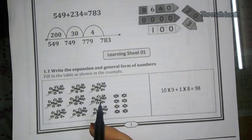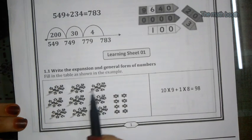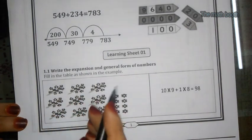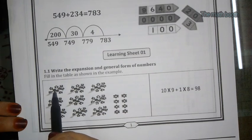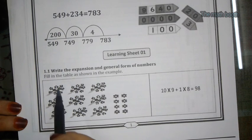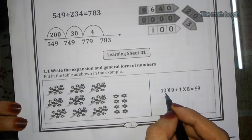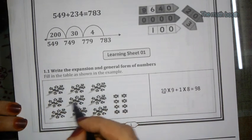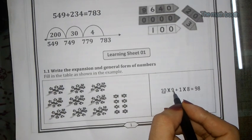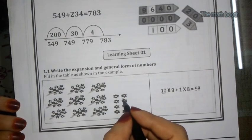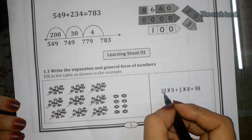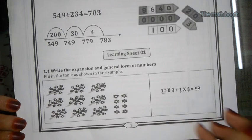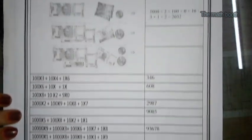The department has solved one example. Here they have given flowers — there are 9 bunches of flowers, and each bunch has 10 flowers. So it is 10 into 9, plus single flowers. There are 8 single flowers. So it is 98 — because 9 is in the tens place and 8 is in the ones place.